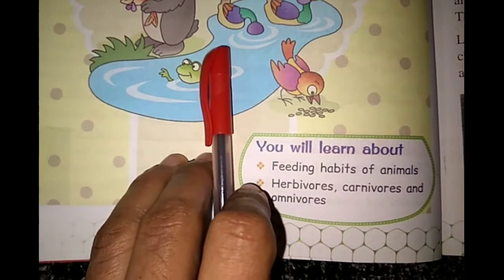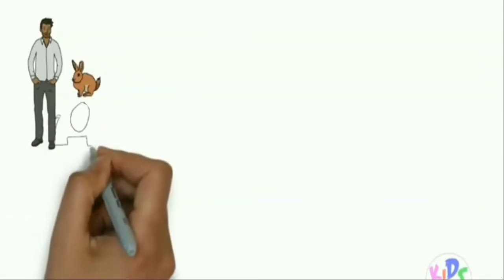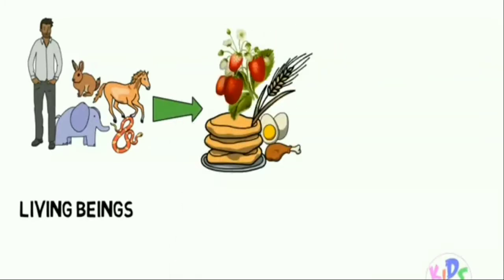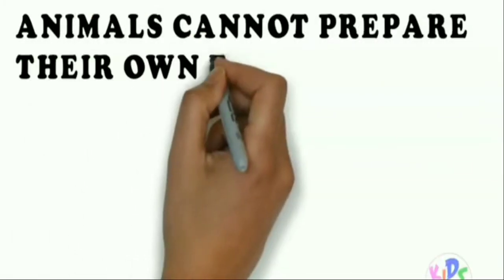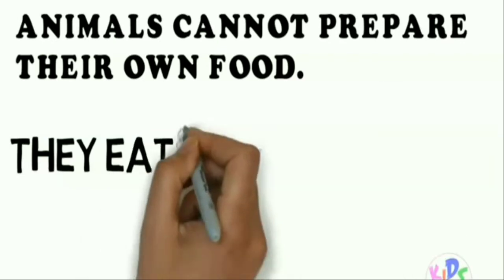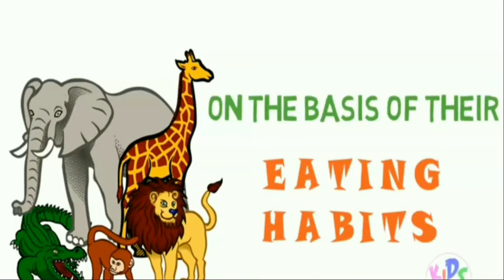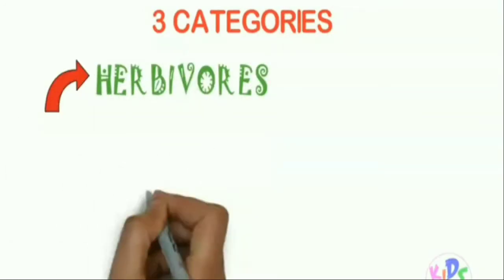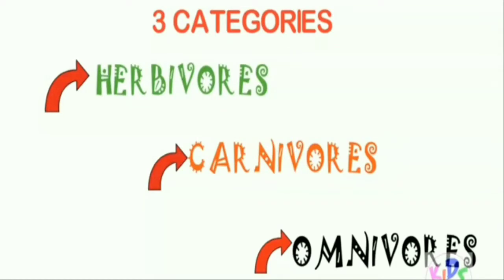But before that, aap ek chhota sa video dekh lo. In this video, we are going to learn about the eating habits of animals. Dear children, as we all know all living beings need variety of food to get energy, to work and live. Animals cannot prepare their own food — they depend upon plants and other animals. Different animals have different eating habits, and on the basis of their eating habits, we can divide animals into three categories: herbivores, carnivores, and omnivores.